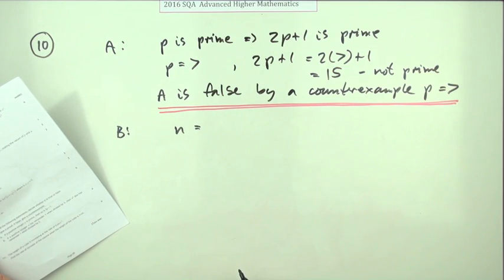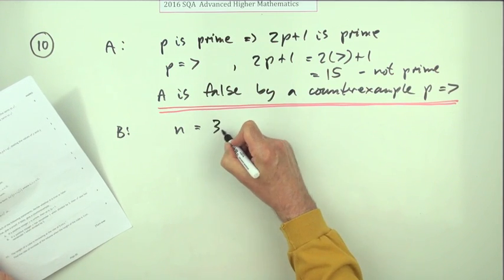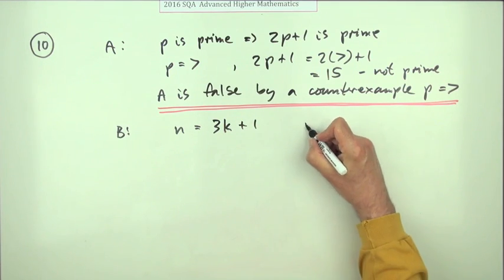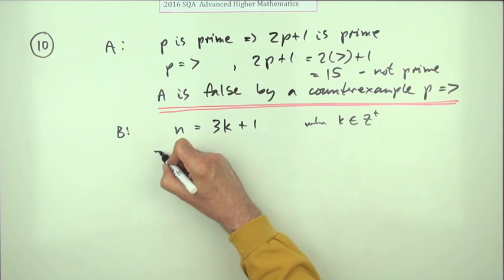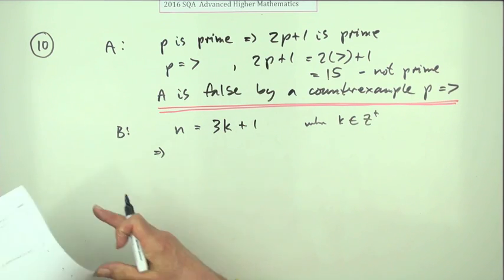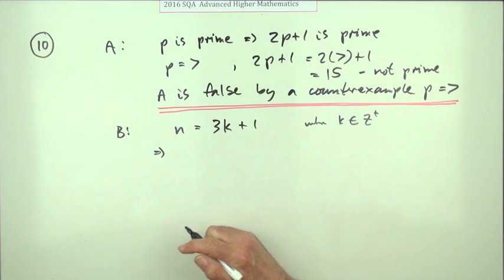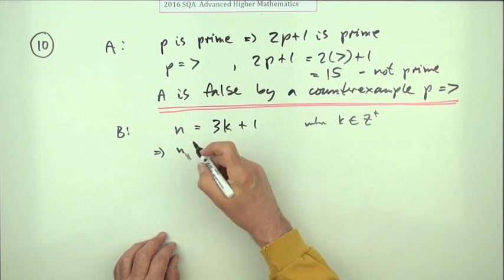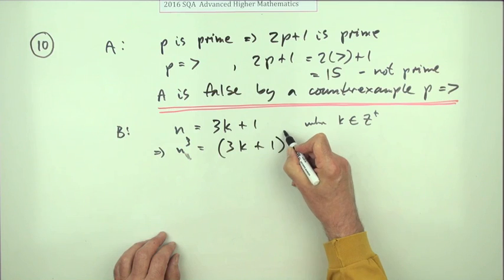If n has remainder 1 when divided by 3, that must mean that n is equal to some multiple of 3 but plus 1. So n equals 3k plus 1, where k is also in that set of positive integers. Show that n cubed also has a remainder of 1. So n cubed would be 3k plus 1 cubed.